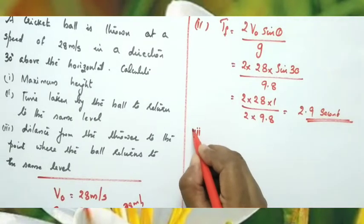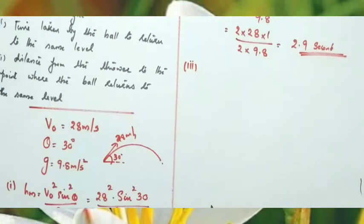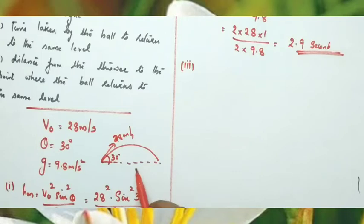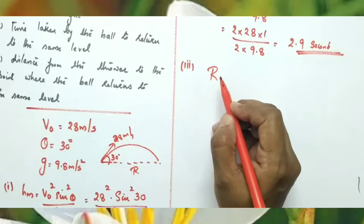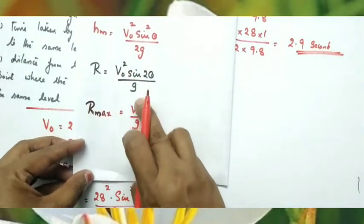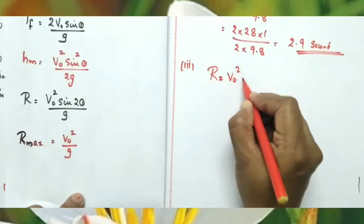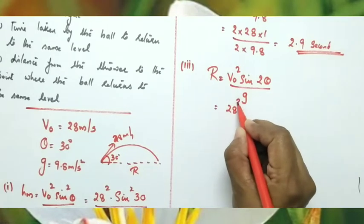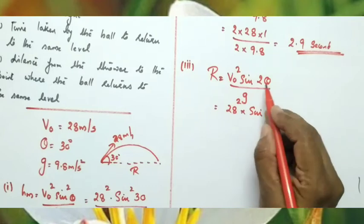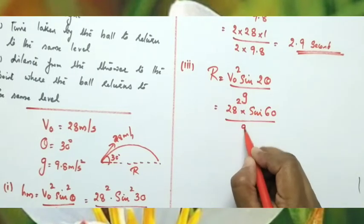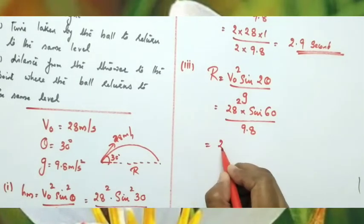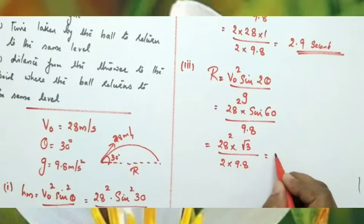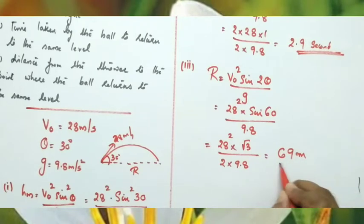For the range (distance from thrower to where ball returns to same level), the formula is R = V₀² sin 2θ / g. Substituting: R = 28² × sin 60° / 9.8 = 784 × (√3/2) / 9.8. After simplification, the range is approximately 69 meters.